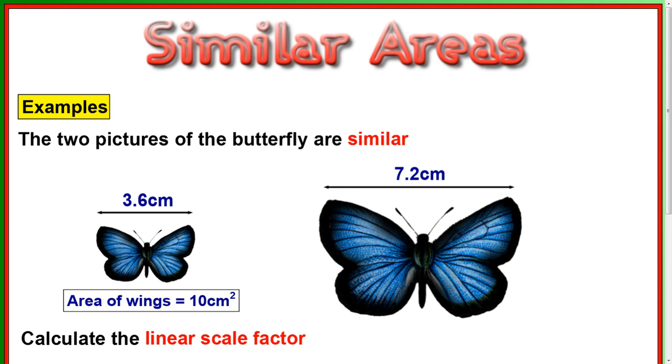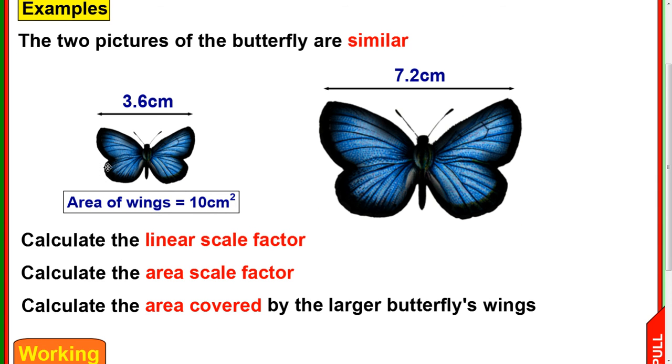Okay, so let's have a look at some questions that might be asked. The two pictures of the butterflies are similar. So it tells us that we've got length 3.6 and the length 7.2, and it's saying the area of the wings is 10 centimeters squared. It's got three parts here. Calculate the linear scale factor, which is just your normal scale factor. Then calculate the area scale factor. And then calculate the area of the larger butterfly.